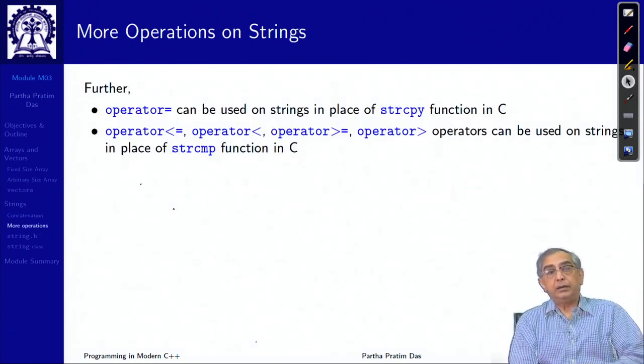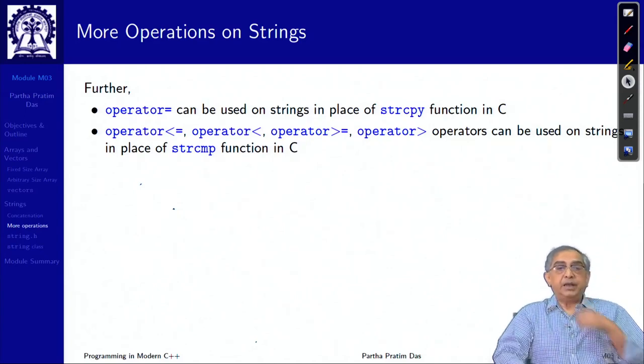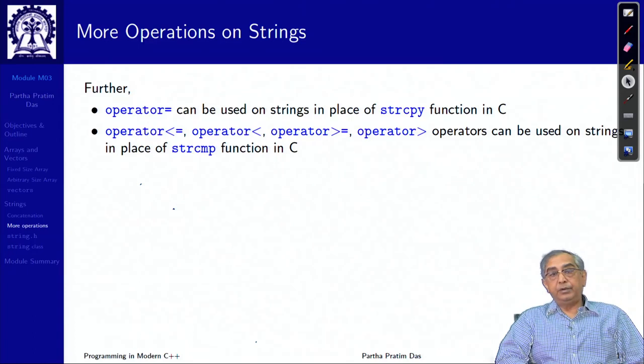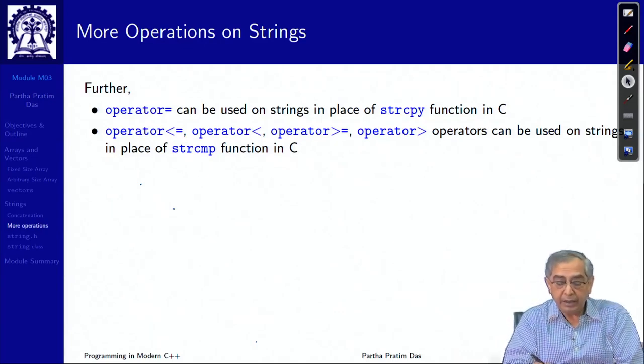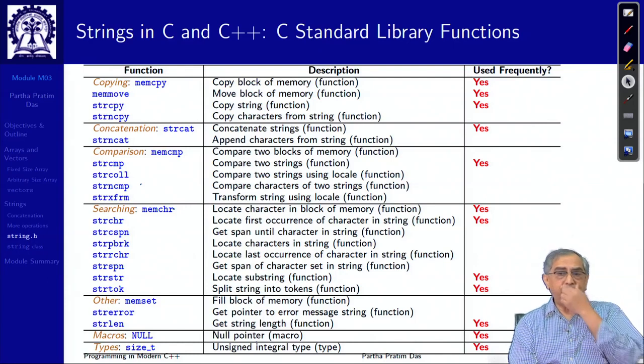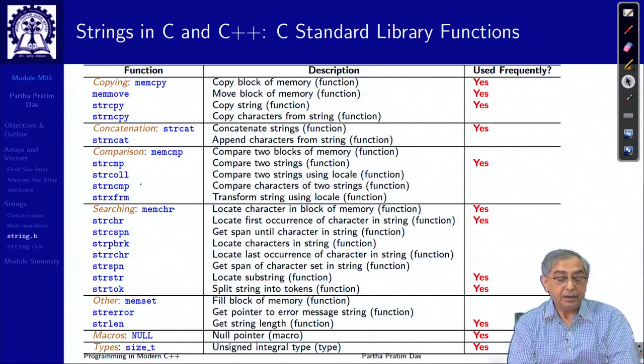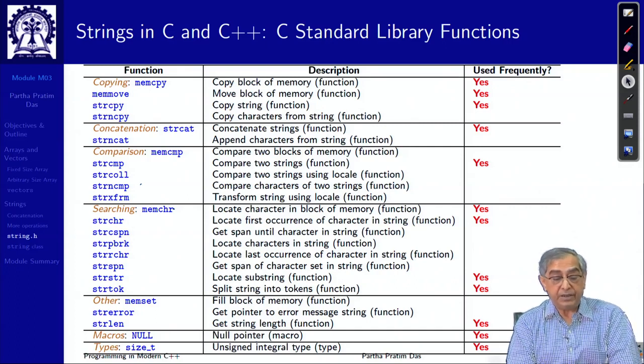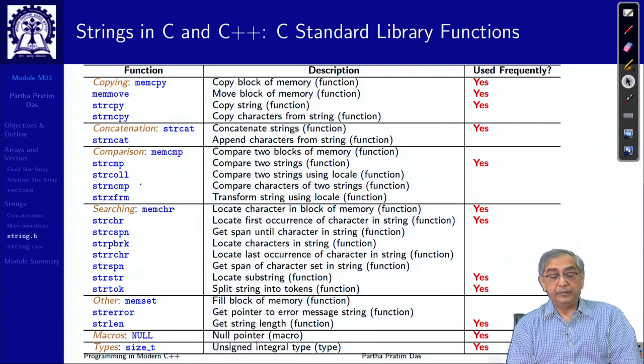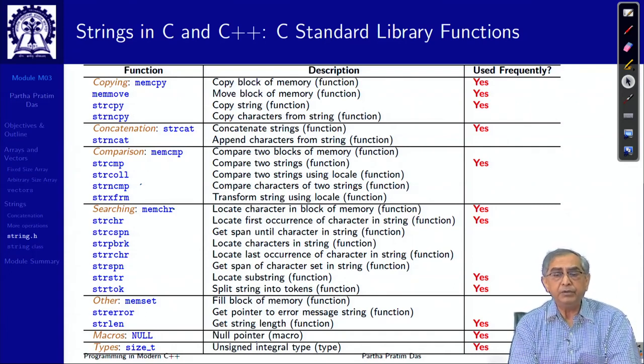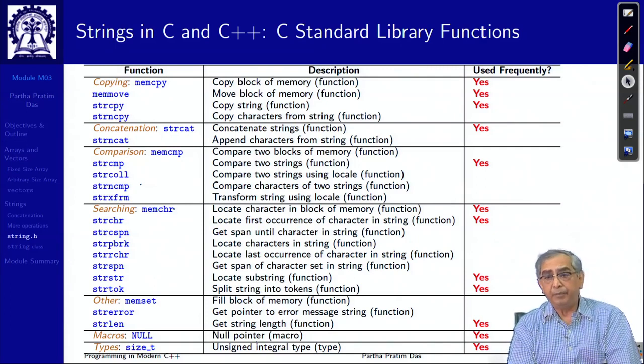Besides this plus you obviously, we have talked about the assignment operator which is the string copy and you can compare using less than equal to, less than, greater than equal to, greater than and so on operators which are equivalent of strcmp in C. Several of these can be done as a part of the type itself. This is your string.h standard library in C. These are the different functions and on the rightmost column, I have put yes to mark that these are the functions which are more commonly used and as a C, C++ programmer, you must be familiar with those.